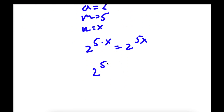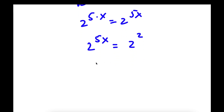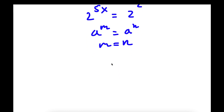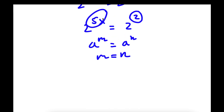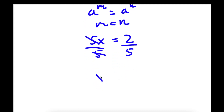So now I have 2 to the power of 5x is equal to 2 squared. And if I have something in the form a to the power of m is equal to a to the power of n, then this means that m is equal to n. So for 2 to the power of 5x is equal to 2 squared, these two exponents would be equal to each other. So I have 5x is equal to 2. Now we want to isolate x, so I'll divide both sides by 5, these two cancel out, and I get x is equal to 2 over 5.